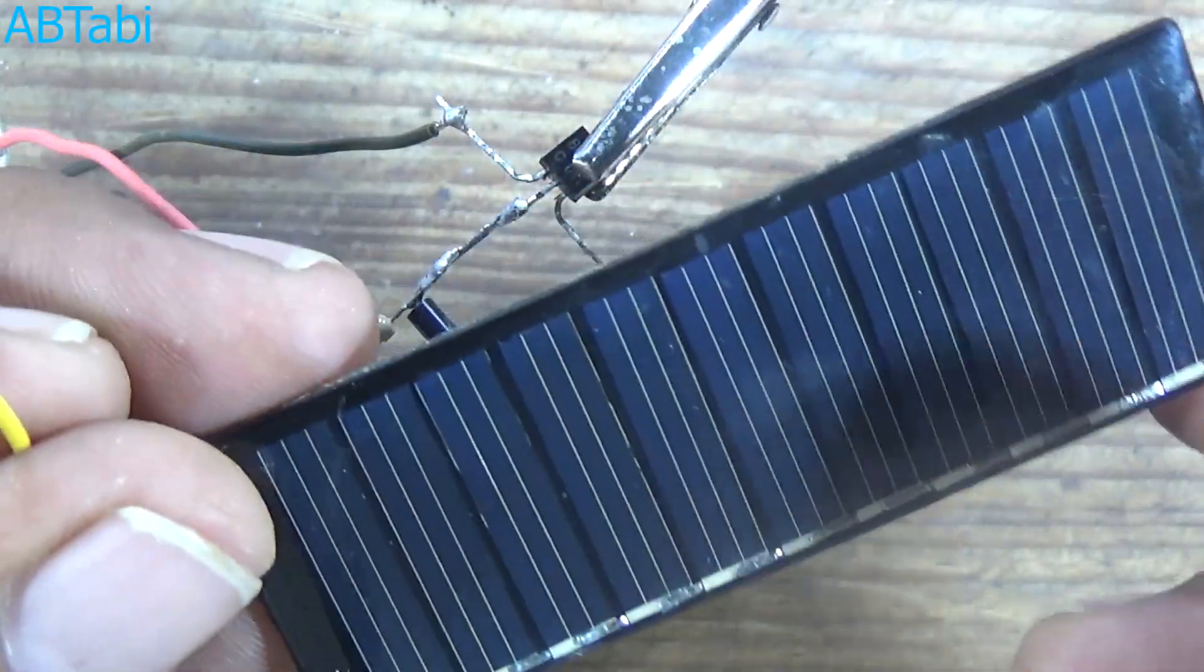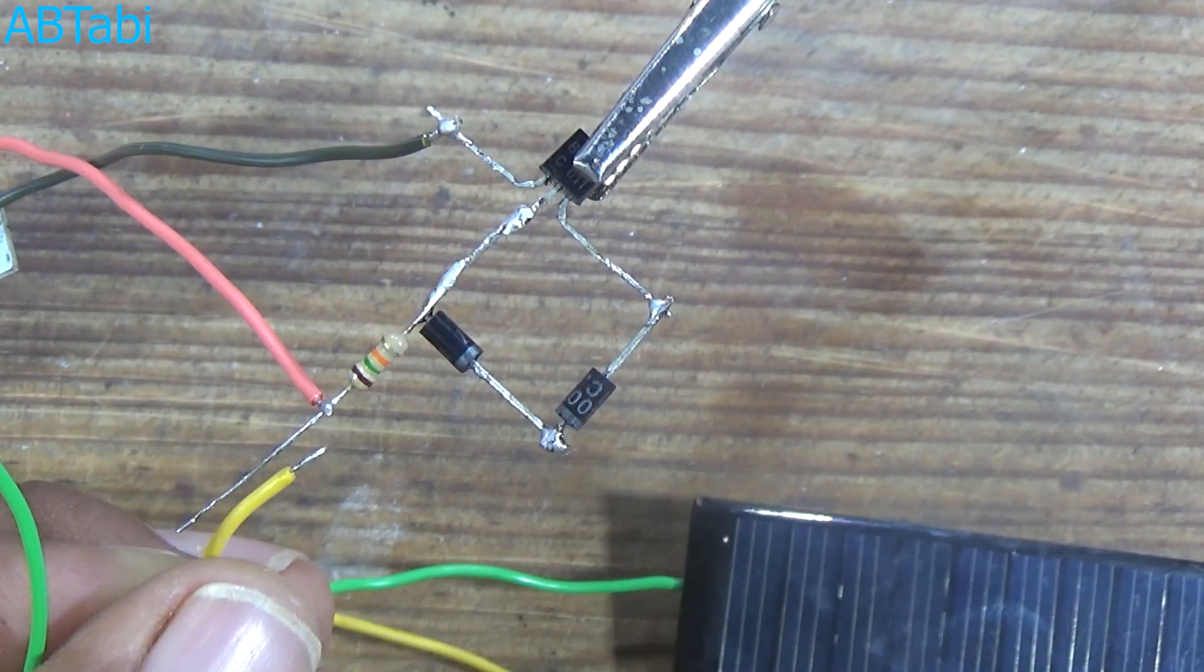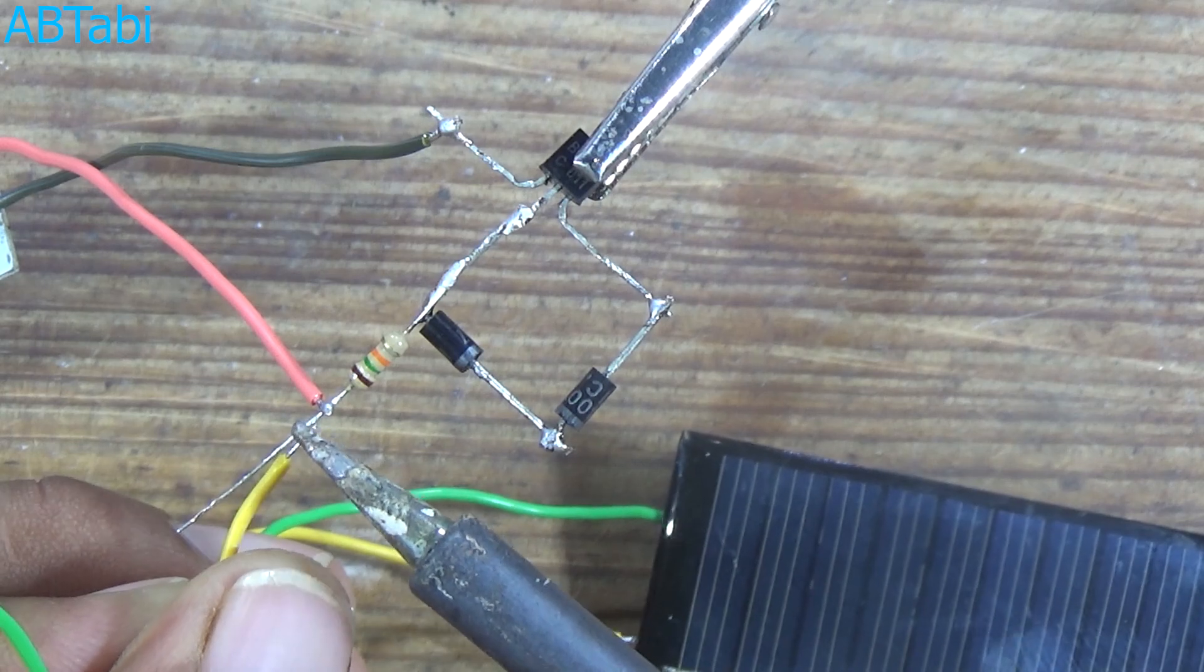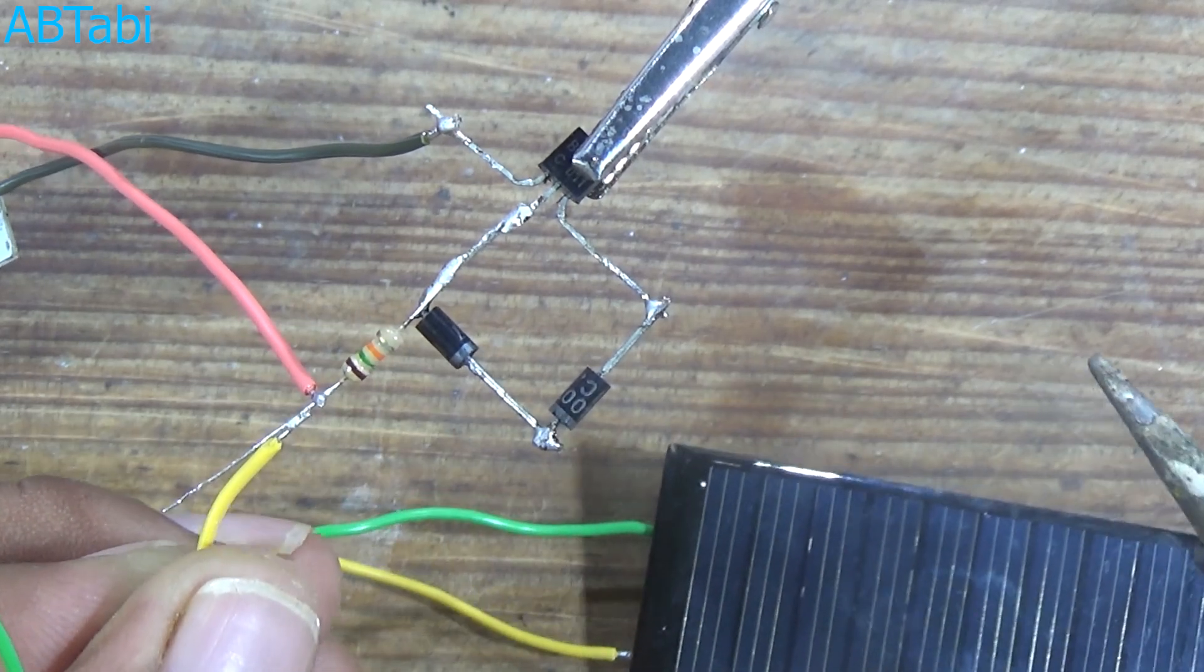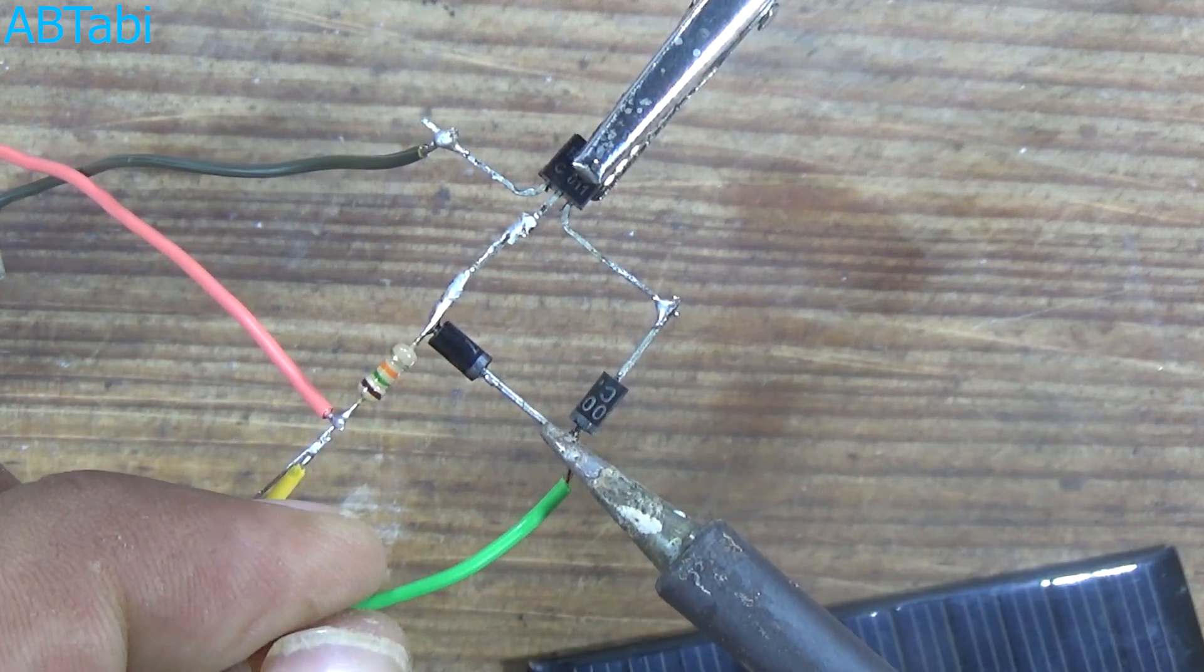5 volt solar panel positive pin connects with 1 5k ohms resistance, and negative side connects with the middle of diodes.